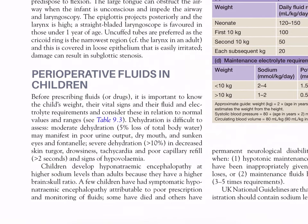Perioperative fluids in children. Before prescribing fluids or drugs, it is important to know the child's weight, their vital signs, and their fluid and electrolyte requirements, and consider these in relation to normal values and ranges. Dehydration is difficult to assess. Moderate dehydration — 5% loss of total body water — may manifest as poor urine output, dry mouth, and sunken eyes and fontanelle. Severe dehydration of more than 10% presents with decreased skin turgor, drowsiness, tachycardia, and poor capillary refill of more than 2 seconds, and signs of hypovolaemia.